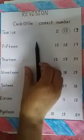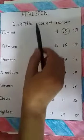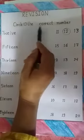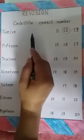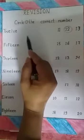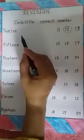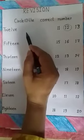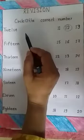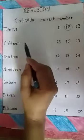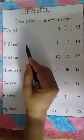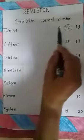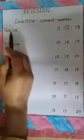Good morning. In today's revision class, we will learn to circle the correct number. There are some words written here. We will read these words and the correct number will be formed. With the word, we will circle the correct number out of the numbers in front of them.